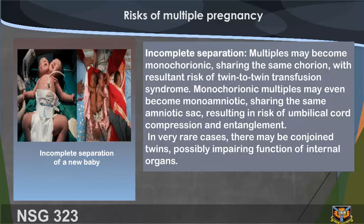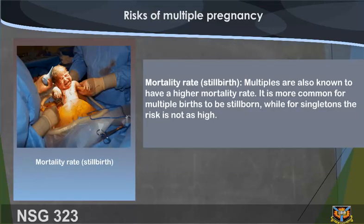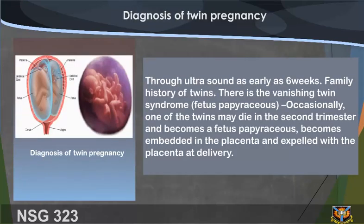Risks of multiple pregnancy also include incomplete separation: multiples may become monochorionic, sharing the same chorion, with resultant risk of twin-to-twin transfusion syndrome. Monochorionic multiples may even become monoamniotic, sharing the same amniotic sac, resulting in risk of umbilical cord compression and entanglement. In very rare cases there may be conjoined twins, possibly with impairment of internal organ function. Multiple births also have a higher mortality rate and are more commonly stillborn compared to singletons.